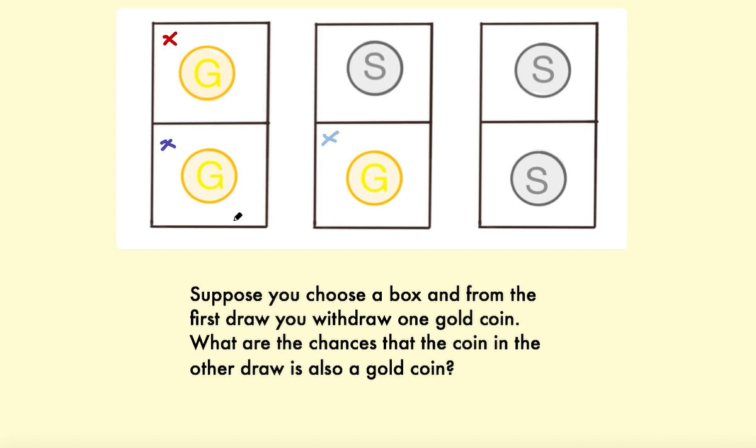So the probability can't possibly be one half because you've got three choices there. So if you picked this gold coin first, you would get a gold coin second.